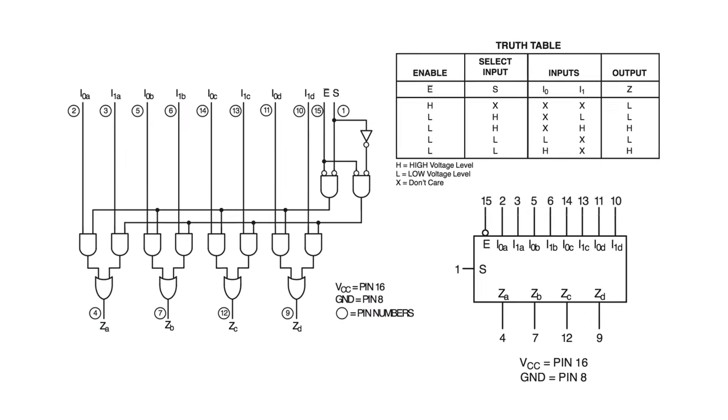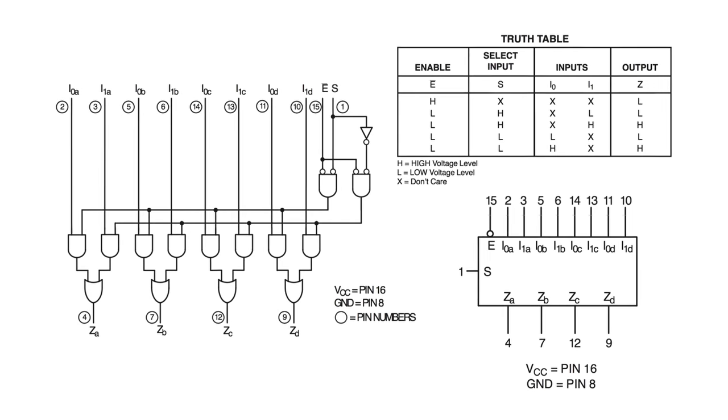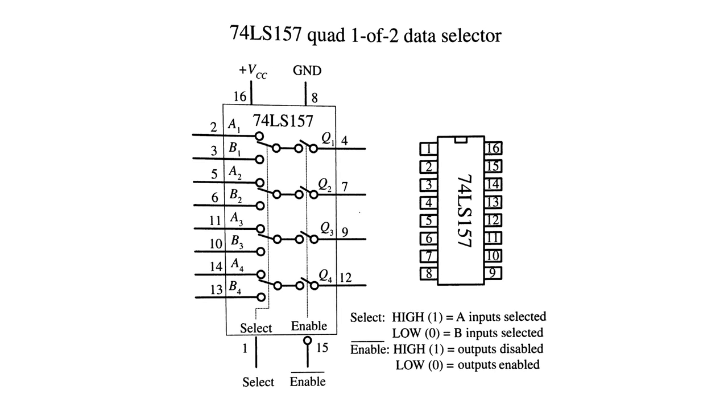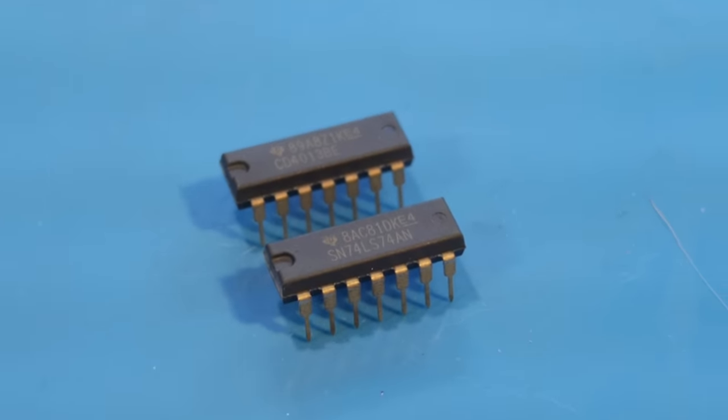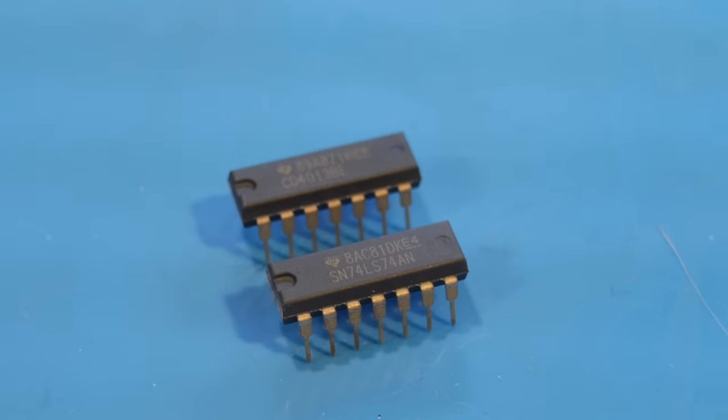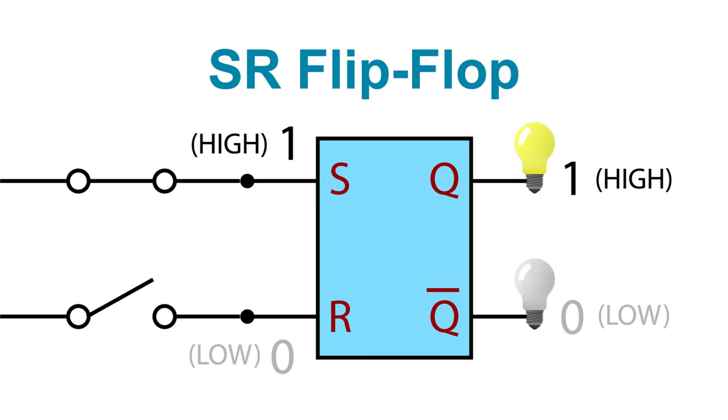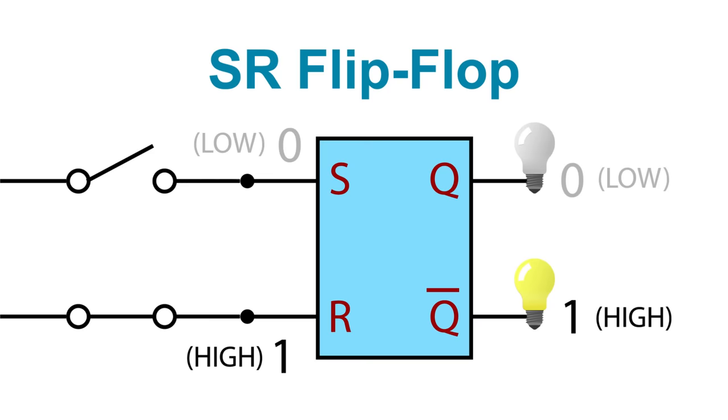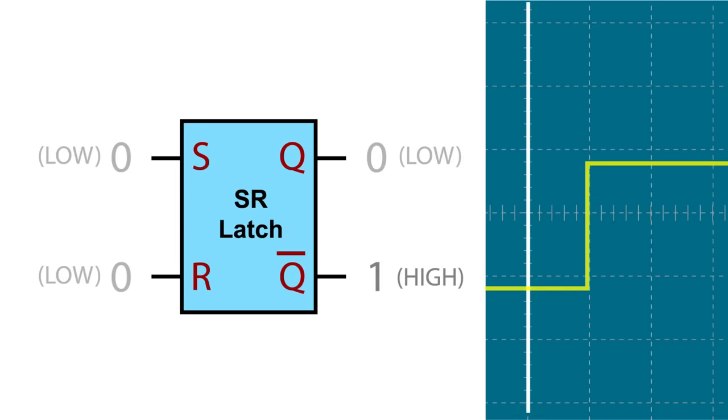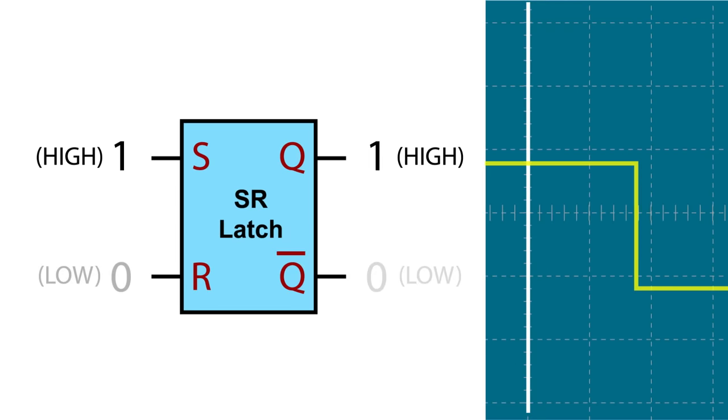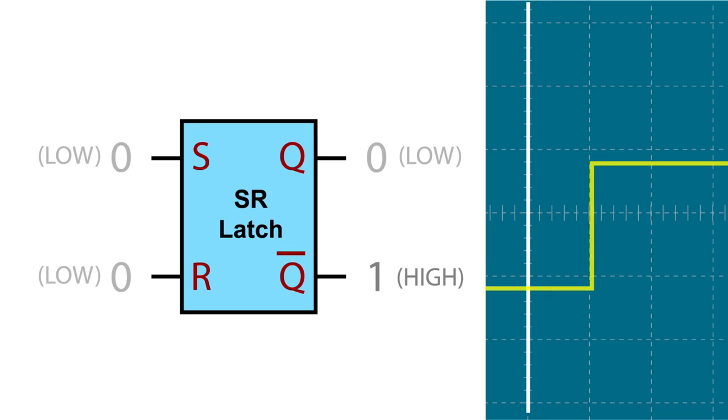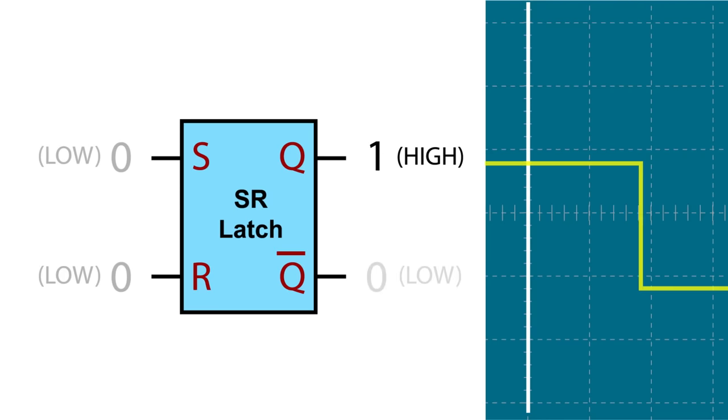Our last lesson was about multiplexers, demultiplexers, encoders, and decoders, combinational logic devices where the output is dependent only on the current state of its inputs. Flip-flops, or latches, are sequential logic devices which have a form of memory built in. Flip-flops are bistable devices, meaning their inputs and outputs can be at one of two states, a logic level 0 or a logic level 1.